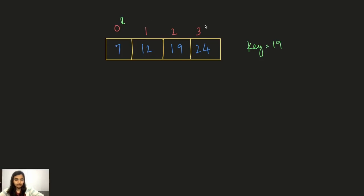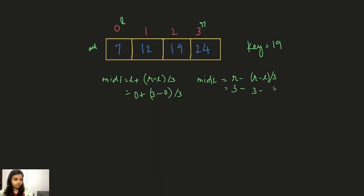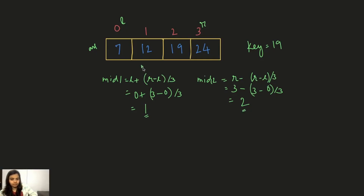We have left = 0 and right = 3 for the sub-array. We apply the same formulas: mid1 = left + (right − left) / 3 = 0 + (3 − 0) / 3 = 0 + 1 = 1. Mid2 = right − (right − left) / 3 = 3 − 3/3 = 3 − 1 = 2. So mid1 is at index 1 and mid2 is at index 2.